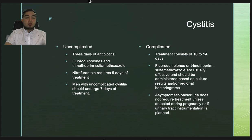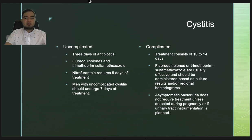For complicated cystitis, fluoroquinolones or trimethoprim-sulfamethoxazole are administered based on culture results and antibiograms, with 10 to 14 days of antibiotics. Asymptomatic bacteriuria does not require treatment unless detected during pregnancy or if urinary tract instrumentation is planned — a positive UTI lab without symptoms does not need treatment unless the patient is pregnant.